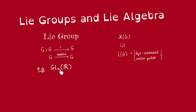An example of a Lie group is the general linear group. Matrix multiplication is given by polynomials in the coordinates of the matrices, so it is smooth, and the inverse map is also smooth — we can deduce that from Cramer's rule.